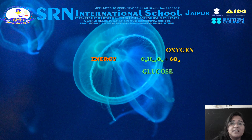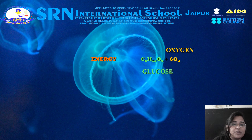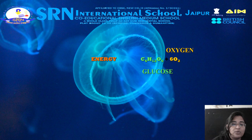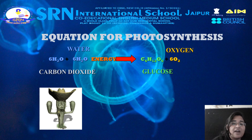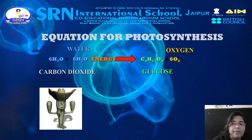Now let's discuss the equation for photosynthesis. The process of photosynthesis is commonly written as: 6CO₂ + 6H₂O → C₆H₁₂O₆ + 6O₂. This means that the reactants — 6CO₂ molecules and 6 water molecules — are converted by light energy captured by chlorophyll, as shown by the arrow on the screen, into a sugar molecule and 6 oxygen molecules as the products.